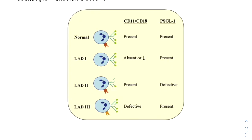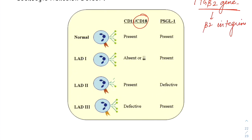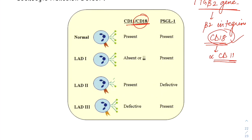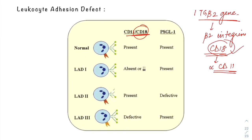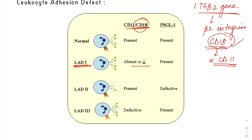There are three main types of LAD. LAD type 1 involves mutation in CD18 (beta-2 integrins) due to mutation in the ITGB2 gene, which is responsible for formation of beta-2 integrins (CD18 class). Because of absent or defective CD18, there is absence of beta-2 integrins in LAD type 1.